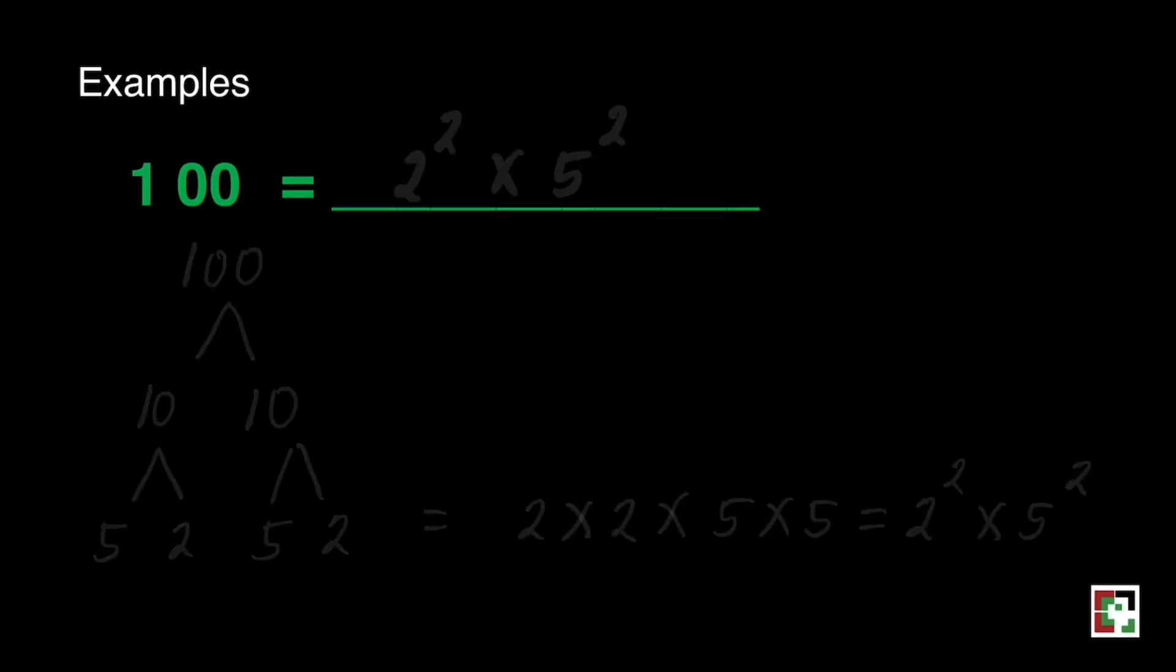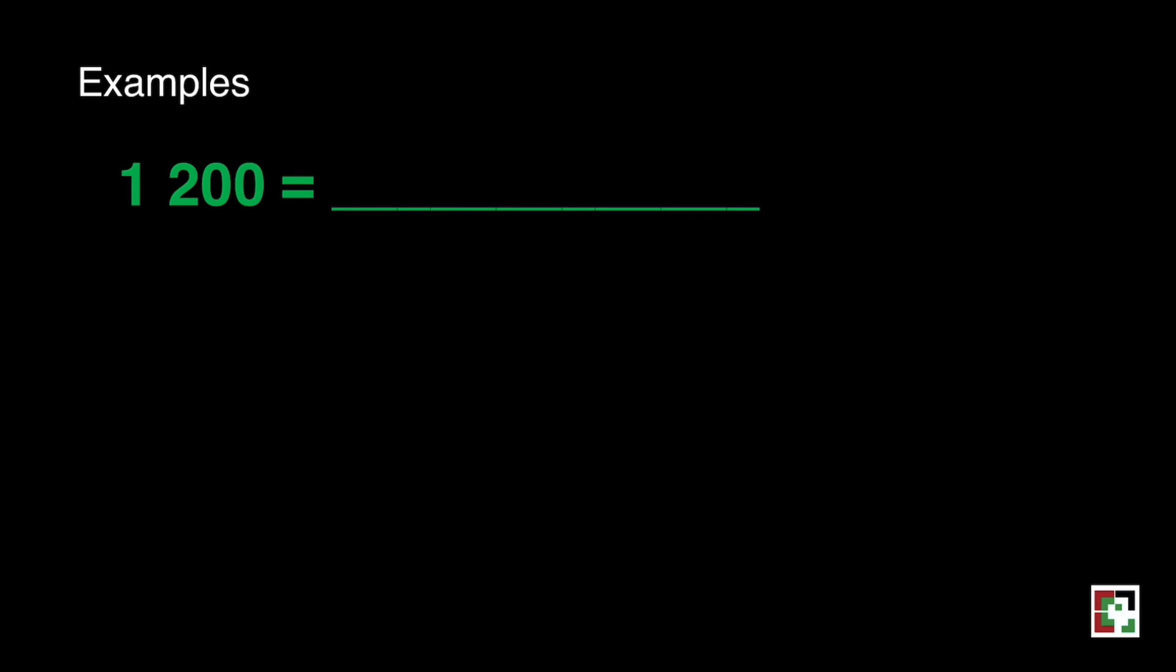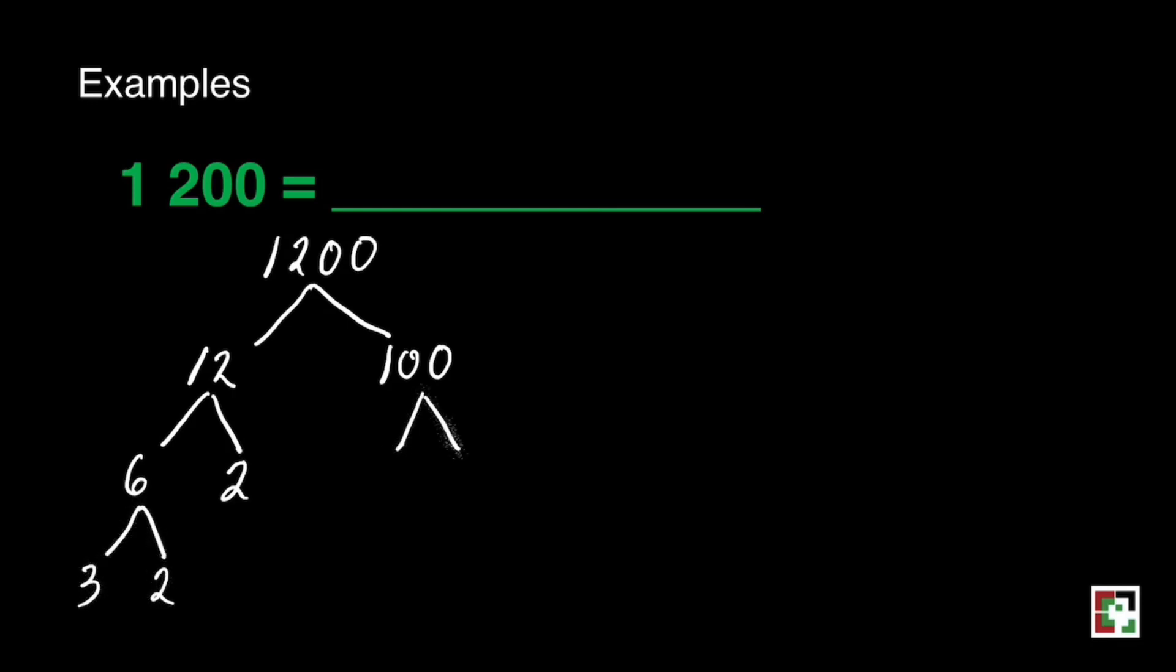The next one is 1,200. The easiest factors that I can think of are 12 and 100. 12, that's 6 times 2. 6 is 3 times 2. 100 is 10 times 10. 10, 5 times 2 and 5 times 2. All we need to do is rewrite them from least to greatest. How many 2's do we have there? That's 2 times 2 times 2 times 2. We have 4 twos.